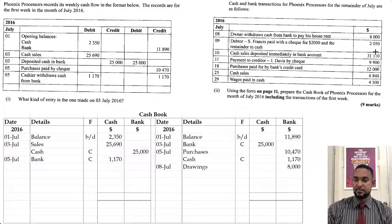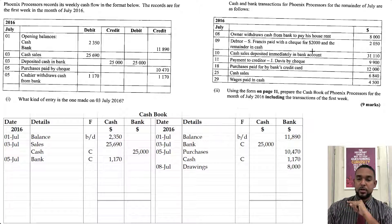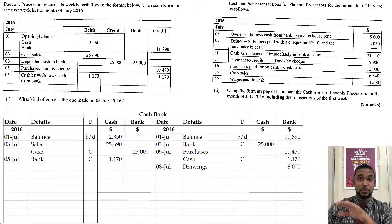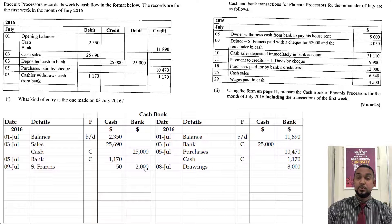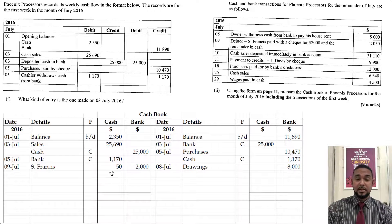Next, debtor S. Francis paid with a check for $2,000 and the remaining cash — the total amount was $2,050. So we got a check for $2,000 and the total was $2,050, but the remainder was in cash. So there was no discount here — a lot of people put discount for this one, but that's not what happened. On the debit side, we're going to have an entry under each column: under the bank column, $2,000 because we got a check for $2,000, and the remaining cash from S. Francis.